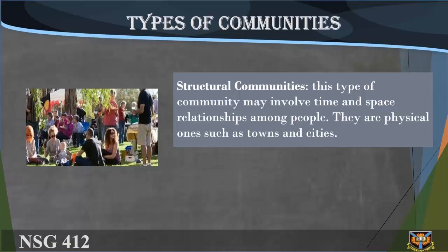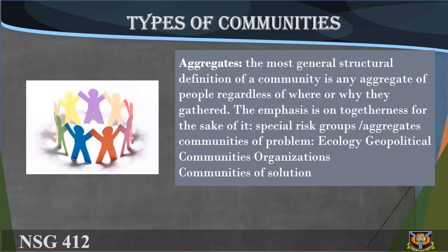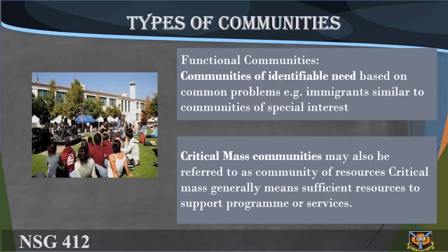Structural communities: this type of community may involve time and space relationships among people; they are physical ones such as towns and cities. Aggregates: the most general structural definition of a community is any aggregate of people, regardless of where or why they gathered; the emphasis is on togetherness for the sake of it. Special risk groups or aggregate communities of problem. Ecology geopolitical communities, organizations, communities of solution. Functional communities: communities of identifiable need based on common problems, e.g., immigrants — similar to communities of special interest. Critical mass communities may also be referred to as communities of resources; critical mass generally means sufficient resources to support a program or services.